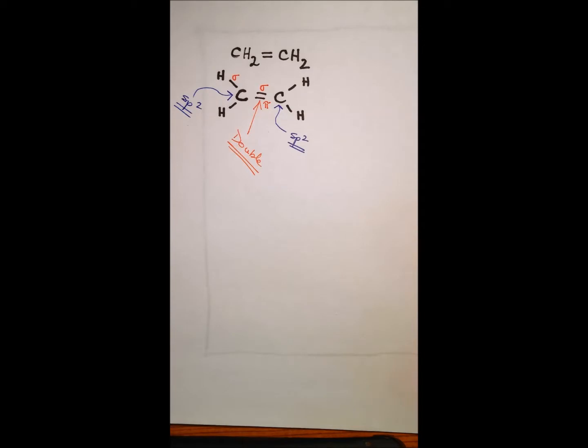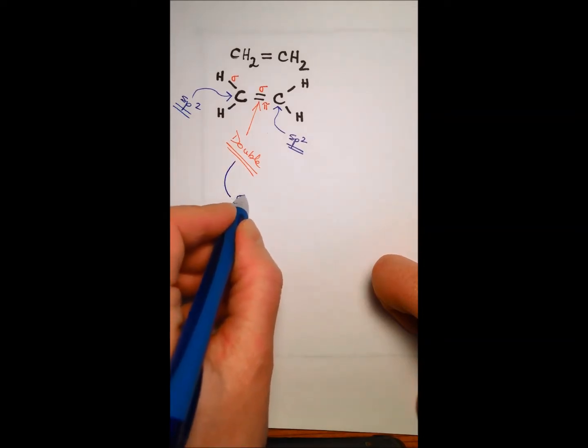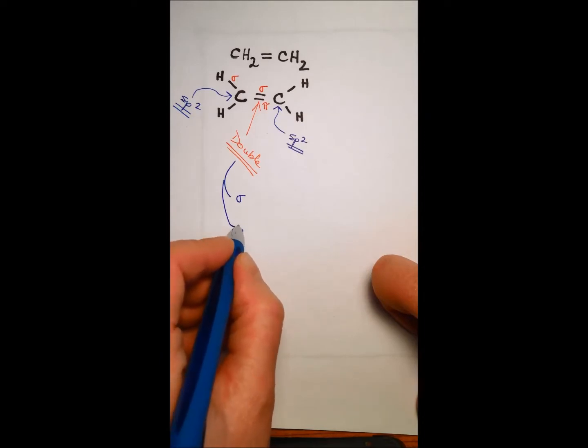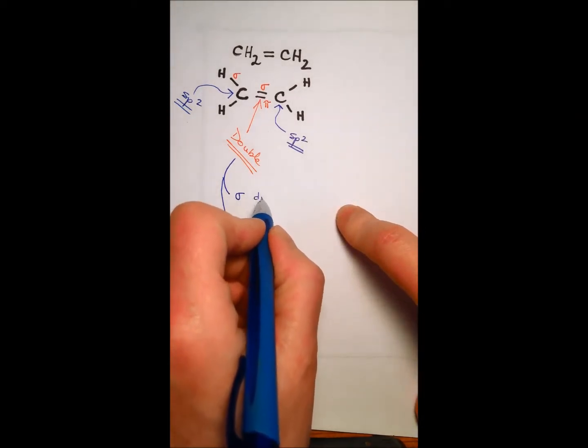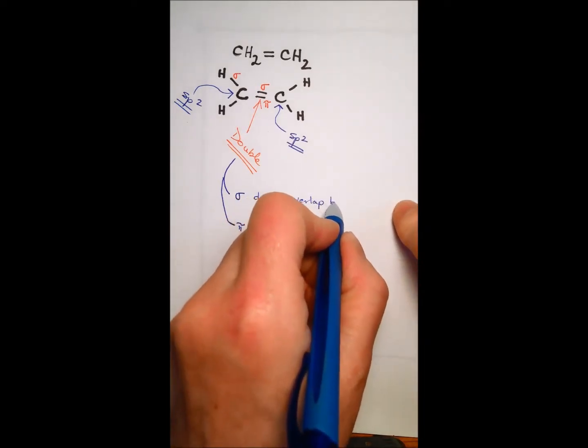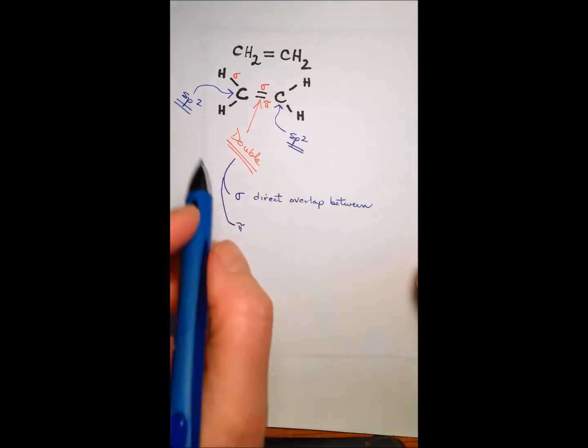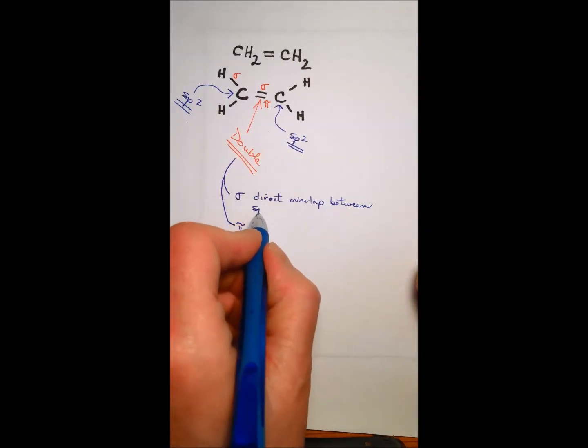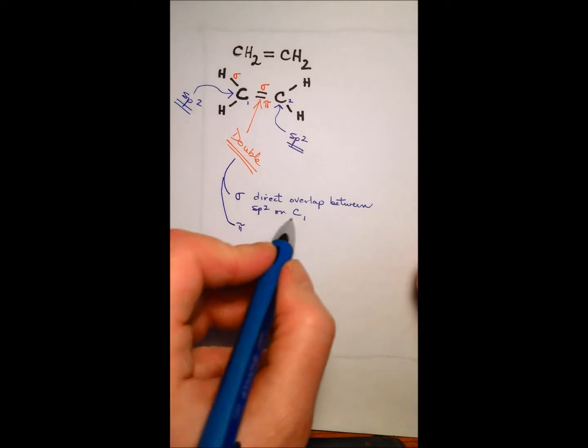Let's describe the sigma bond completely between these two carbons. Well, the double bond is made up of a sigma and a pi. But if I want to describe the sigma bond, the sigma bond is a direct overlap between what on this carbon and what on this carbon. They're the same, so it's between the sp2 on C1, let's call this guy C1 and this guy C2, and the sp2 on carbon 2.